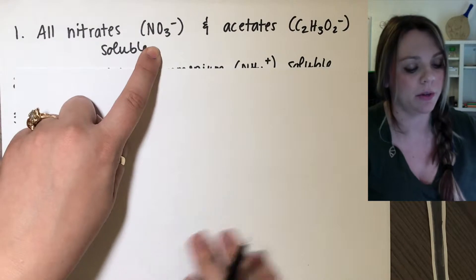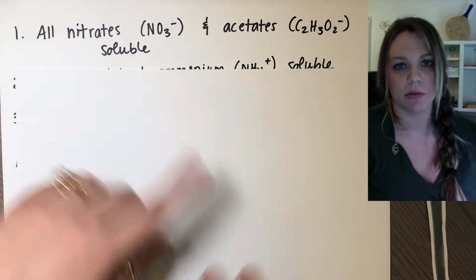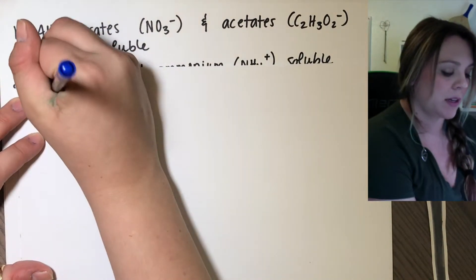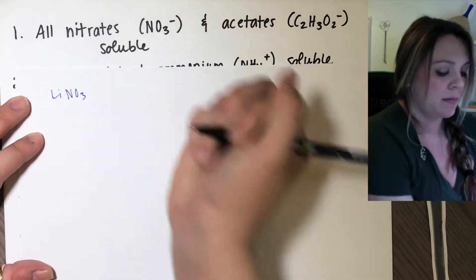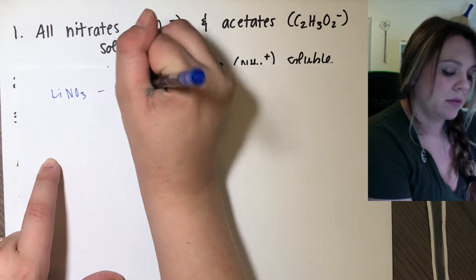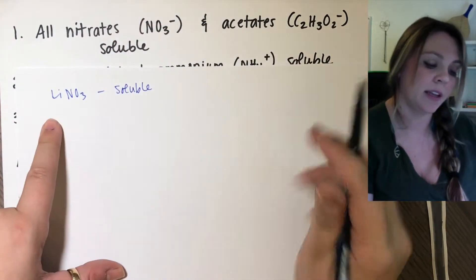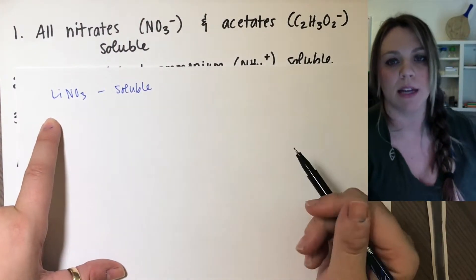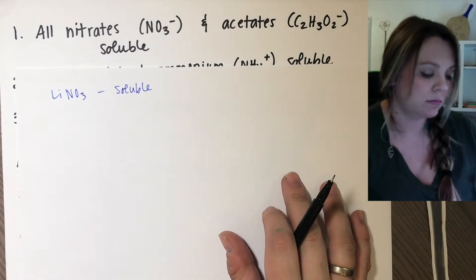So all nitrates, which is NO3 minus, and acetates are soluble. So it doesn't matter what a nitrate is bonded to. It could be lithium nitrate. Boom. I have a nitrate that dude is soluble. If I had lithium acetate, it's an acetate. It's soluble. Easy.